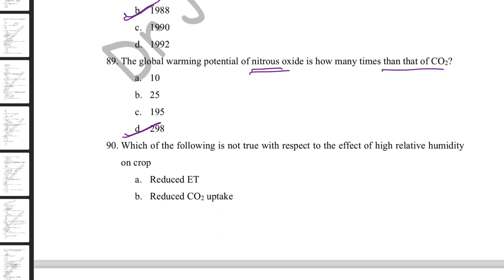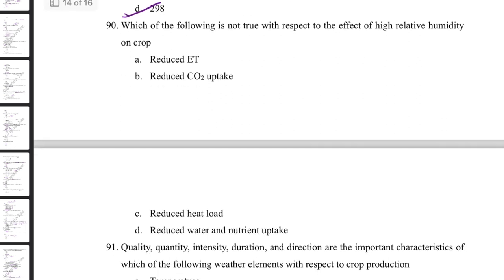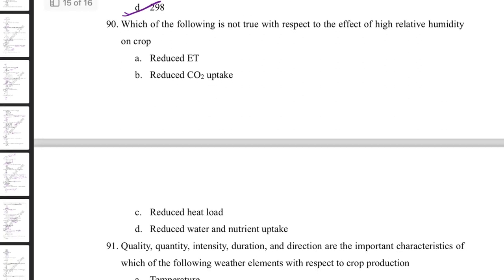The global warming potential (GWP) of nitrous oxide is 298 times that of carbon dioxide — meaning one mole of N₂O traps the same radiation as 298 moles of CO₂. Methane has a GWP of 25 times that of CO₂. So nitrous oxide is a more potent greenhouse gas than methane.